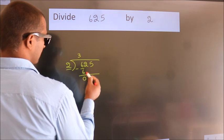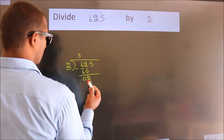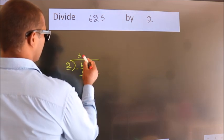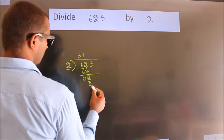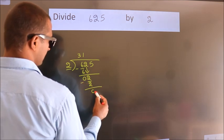After this, bring down the next number: 2. When do we get 2? In the 2 table, 2 times 1 is 2. Now we subtract and get 0.